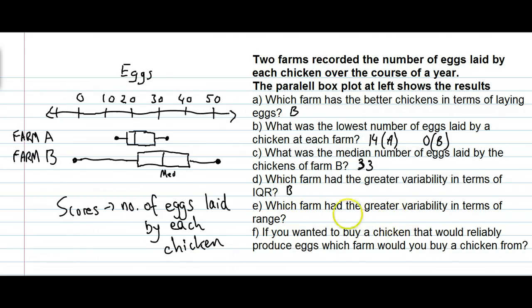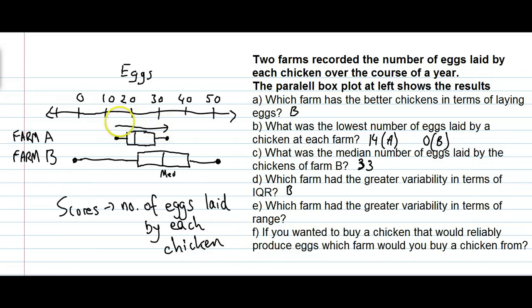Question E: which farm had the greater variability in terms of range? Again, it was farm B. There's a range from the maximum to the minimum of 50 eggs — a very wide range. In farm A, it's a much shorter range, going from about 14 up to 32 or 33. So the range for farm A is smaller than the range for farm B, meaning there was greater variability in the range at farm B.